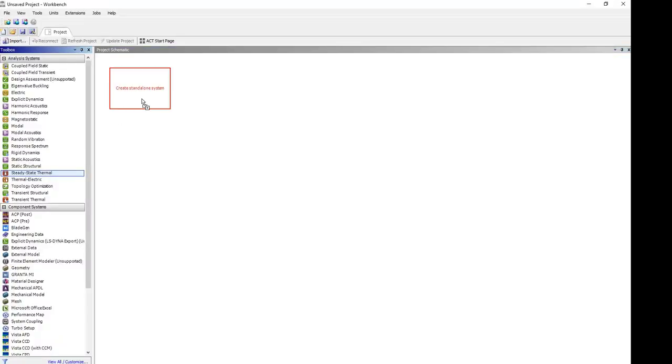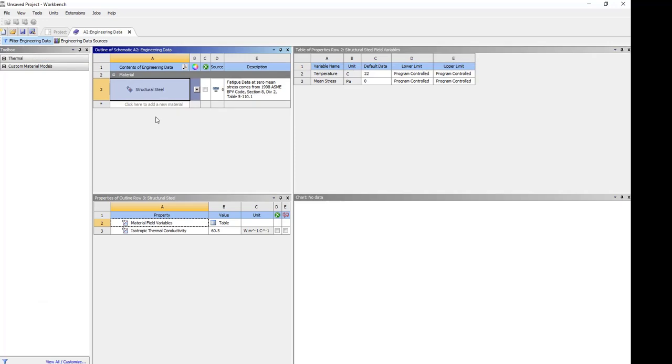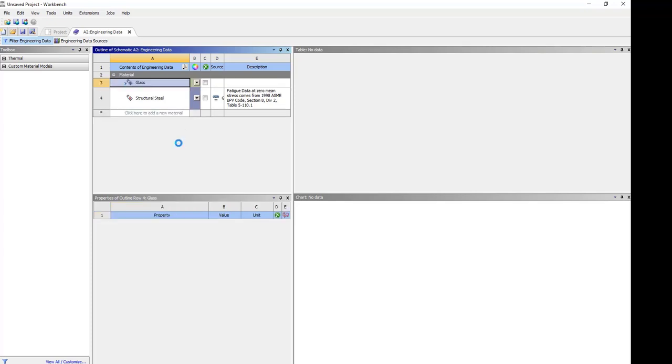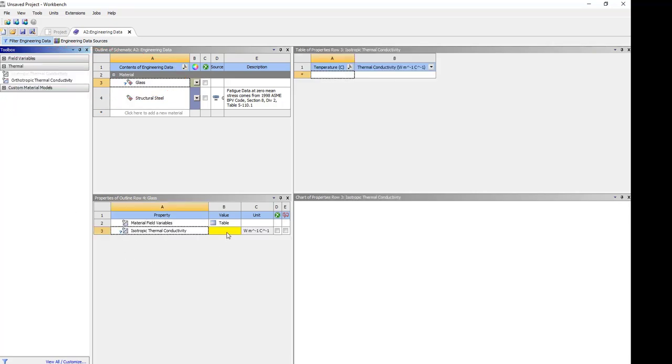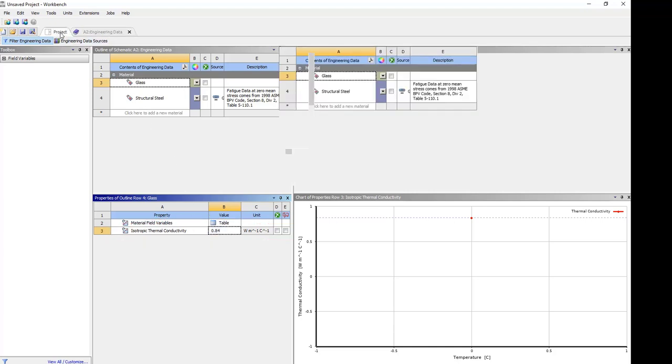Drag and drop a steady state thermal system from the toolbox to the project page. Open engineering data. Create a new material and give it the name glass. Right mouse click on isotropic thermoconductivity in the toolbox. Include this property. Set value of thermoconductivity to 0.84 watts per meter and degrees Celsius. Go back to the project page and import geometry.